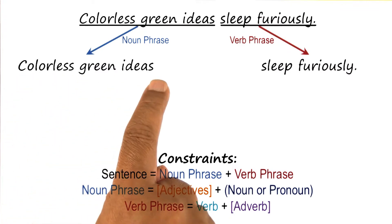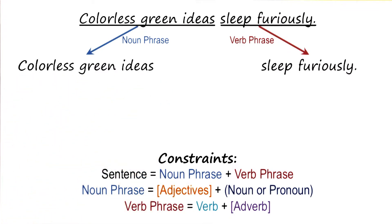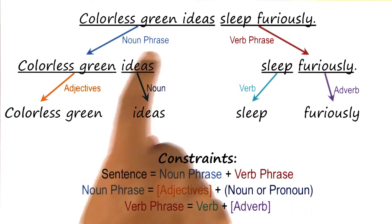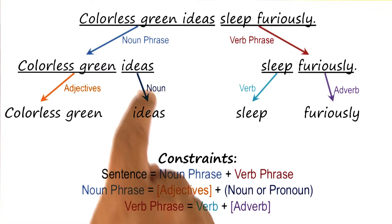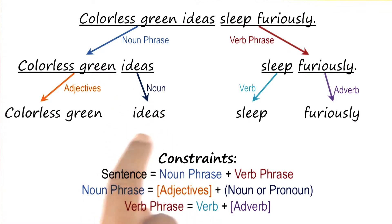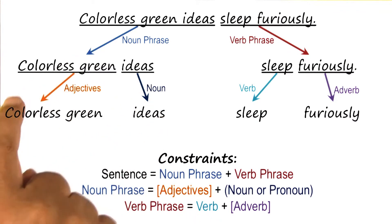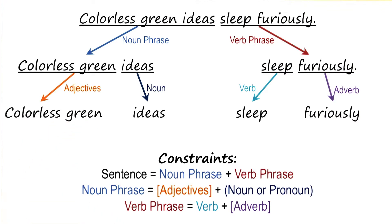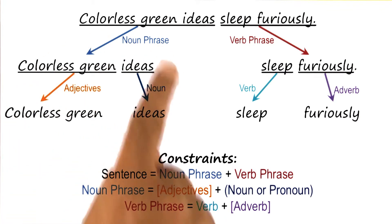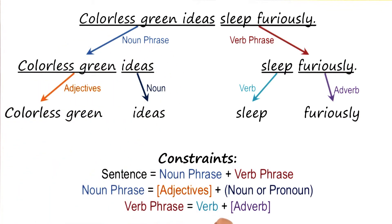So let us look at 'colorless green ideas.' We know that a noun phrase can go into one or more adjectives followed by a noun or a pronoun. We can look at a lexicon and know that 'ideas' is a noun. We can also look at a lexicon that tells us that 'colorless' and 'green' are adjectives. We have satisfied this part of the constraint.